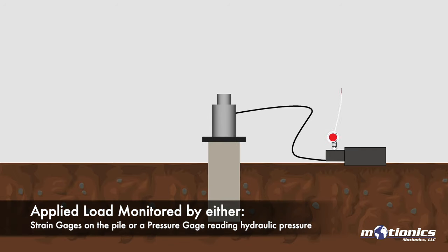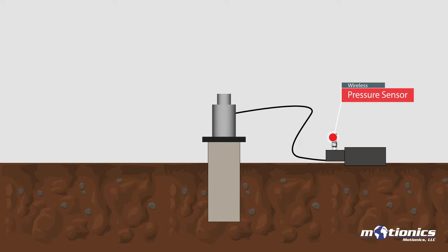Applied load can be monitored through strain gauges on the pile or hydraulic pressure. Here, a wireless pressure sensor is installed on the pressure port of the hydraulic pump to monitor load application.